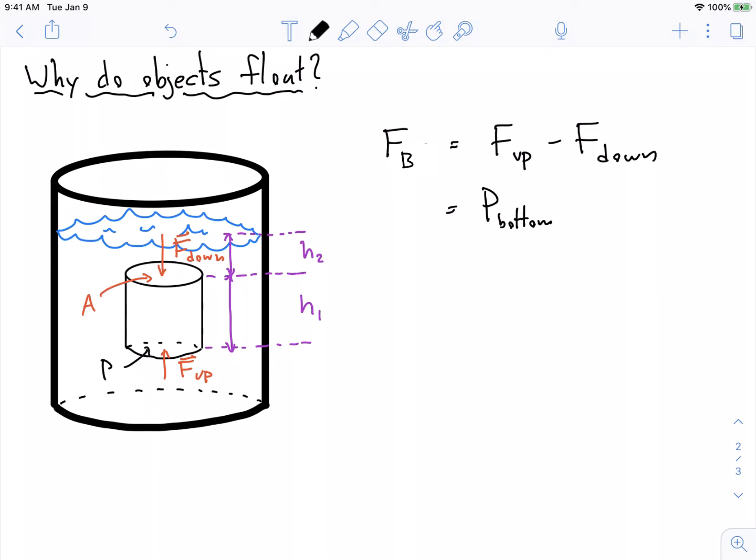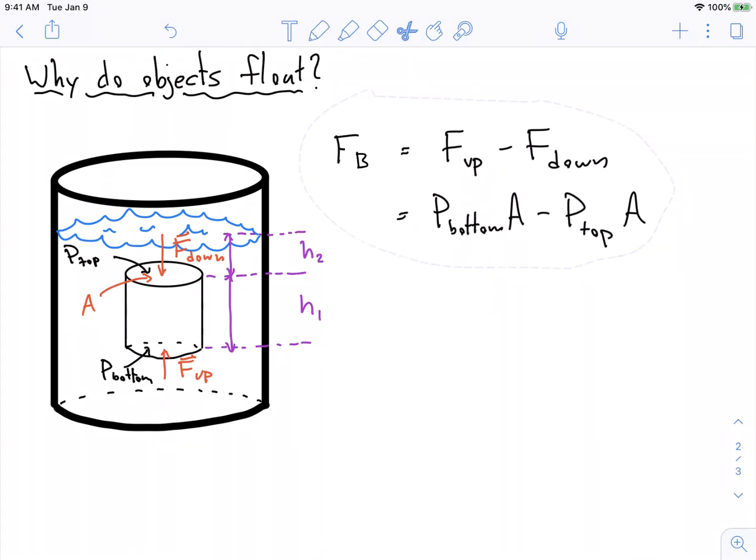So let's call that P bottom, times the area that it's acting on, minus the pressure at the top, which is acting down on the top here, P top, which is acting on that same area A.